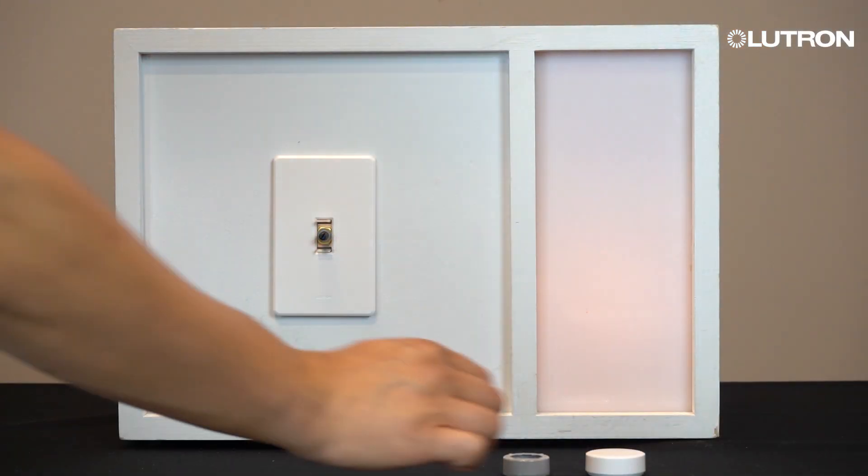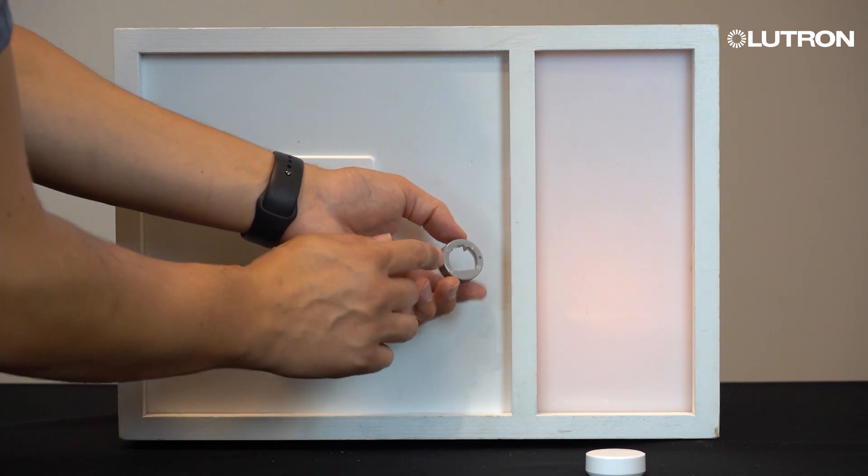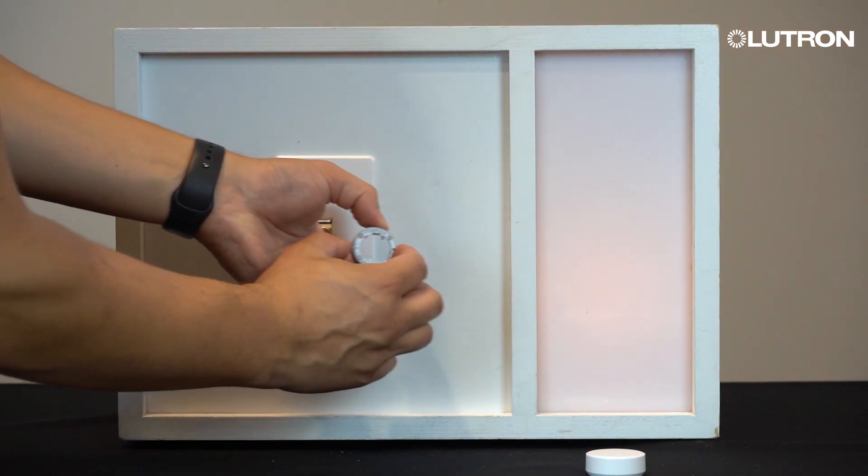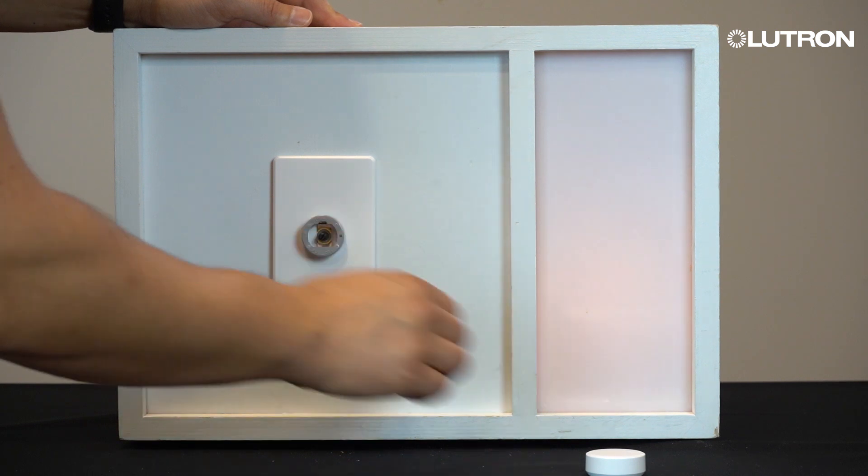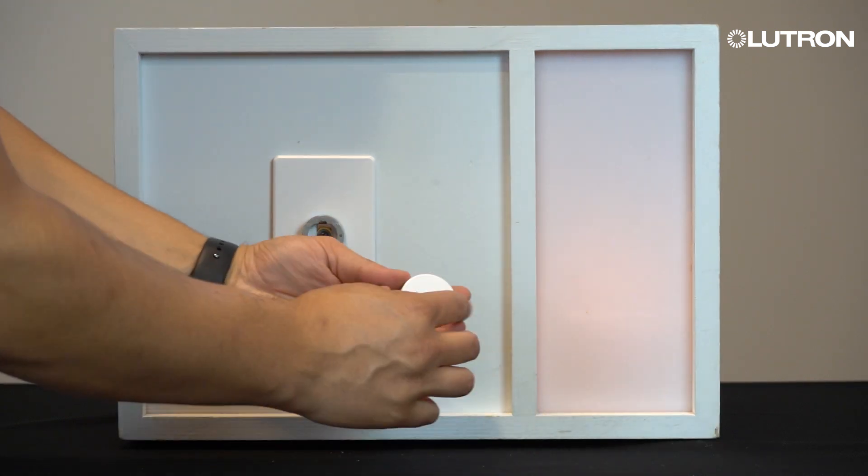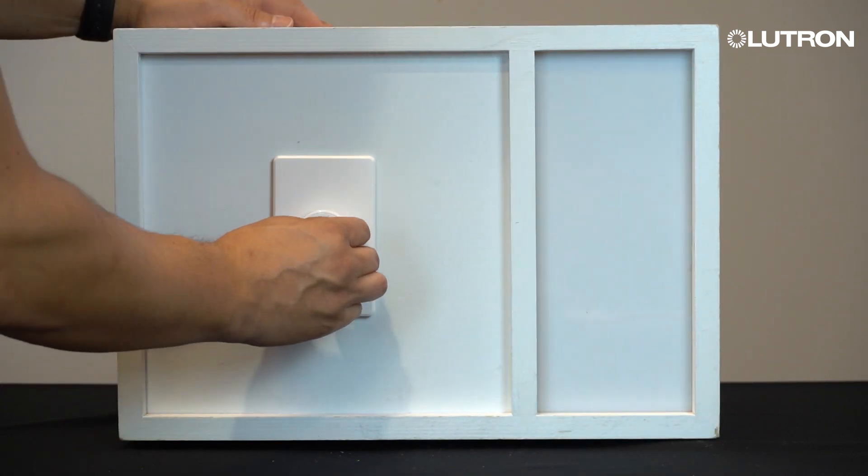You are now ready to reinstall the light ring. Align the ring with the arrow pointing in the upper direction. Firmly push the light ring onto the shaft. Align the knob and press firmly to finish off the installation.